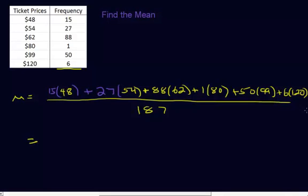Okay, so let's add up the numerator, and then divide by one-eighty-seven. And I get, on the numerator, thirteen-thousand three-hundred and eighty-four divided by one-eighty-seven. And I get seventy-one dollars and fifty-seven cents. So that's our mean.